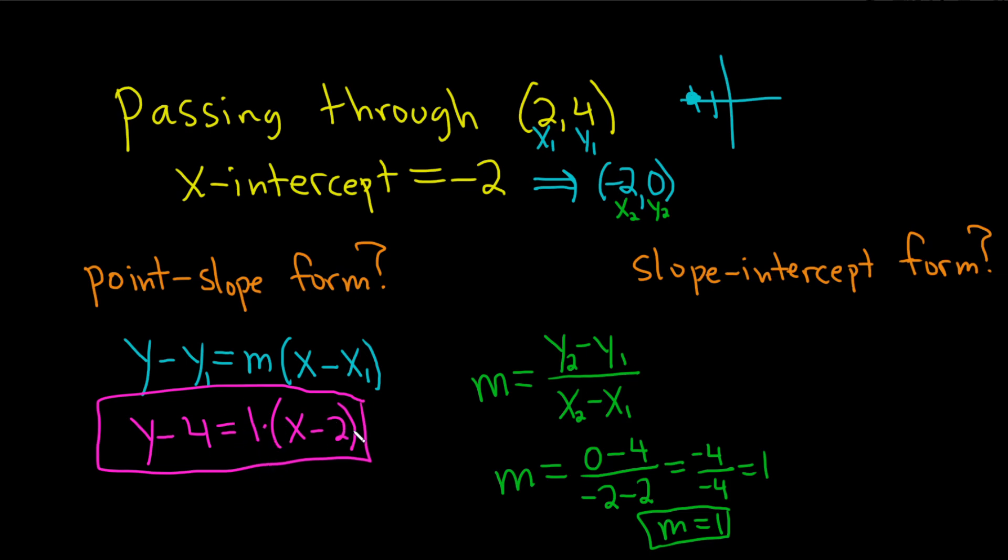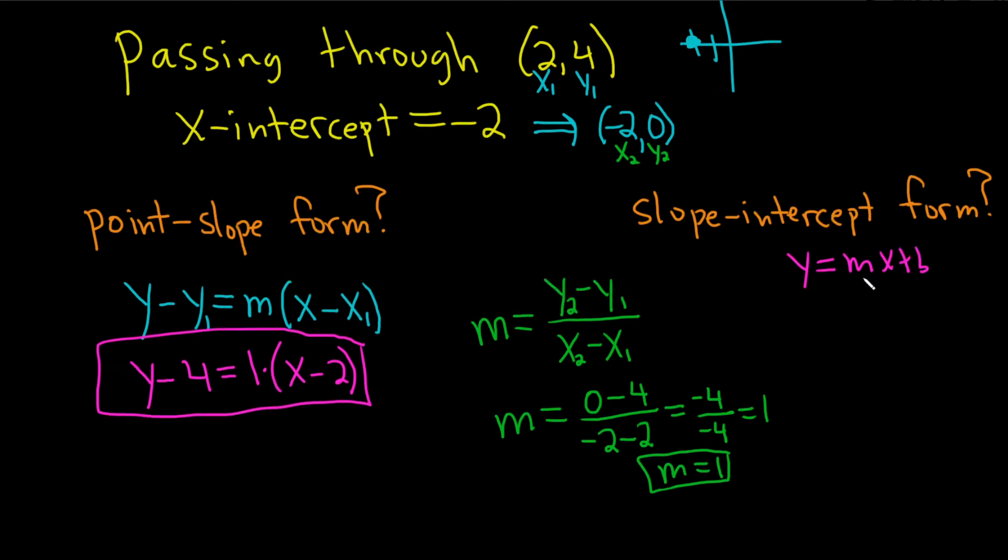So that's it. You don't want to solve for y. Not yet. Now we want the slope-intercept form. So what is that? The slope-intercept form is y equals mx plus b. So basically, now we solve for y. So we just take this and solve for y, and that gives us this answer here.